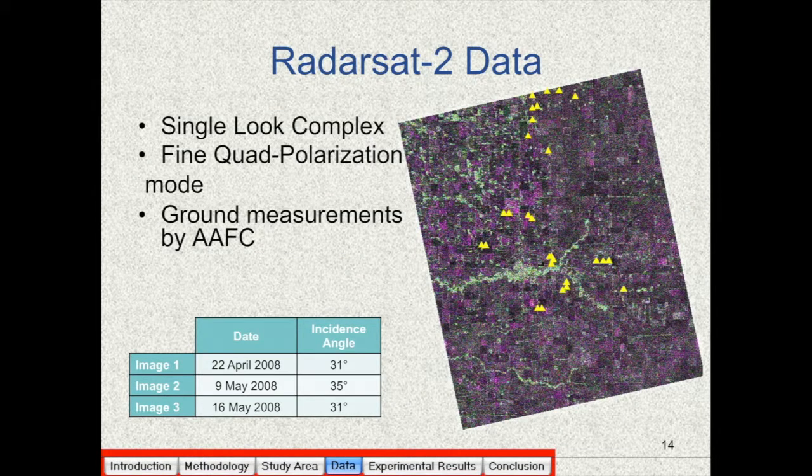We had three Radarsat-2 images acquired on April 22nd, May 9th and May 16th, 2008. They were single look complex images acquired in fine quad polarization mode. And the ground measurements were done by Agriculture and Agri-Food Canada. This picture shows the first image, image of April 22nd, and the yellow triangles show the location of ground measurement sites.